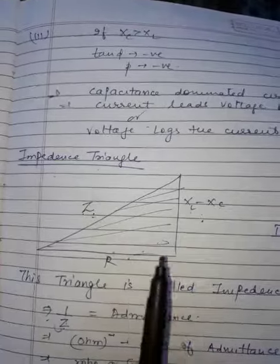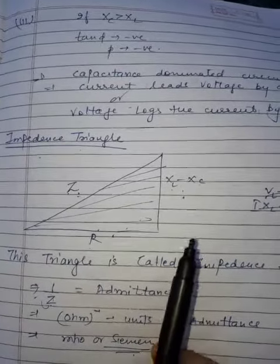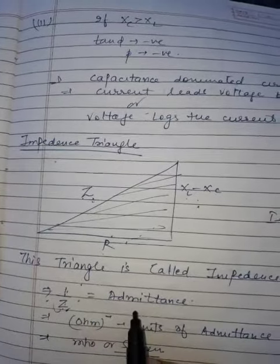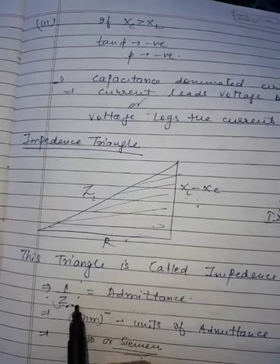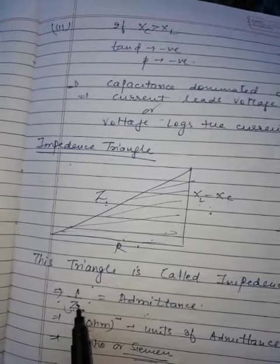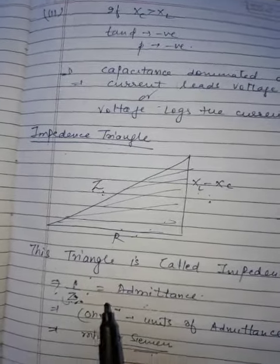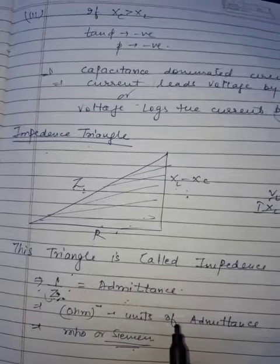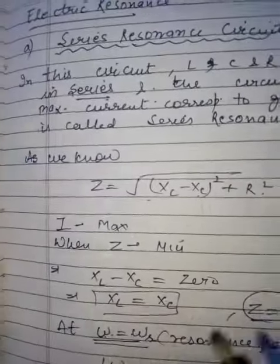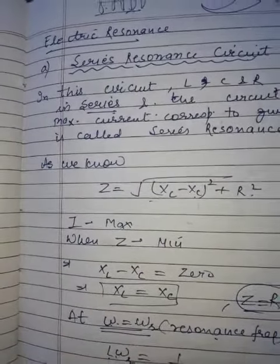One by Z, meaning one by resistance, is called admittance. The units of Z are ohm, so this becomes ohm inverse. The unit of admittance is ohm inverse, also called mho or siemen. So this was all about the impedance triangle. Thank you.